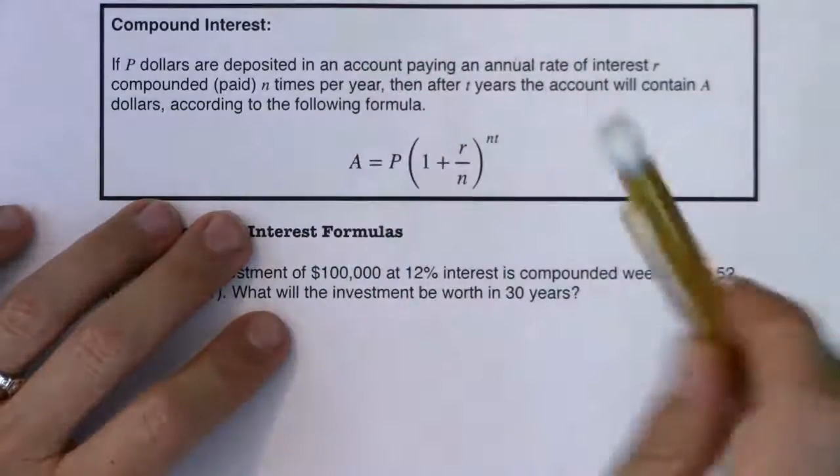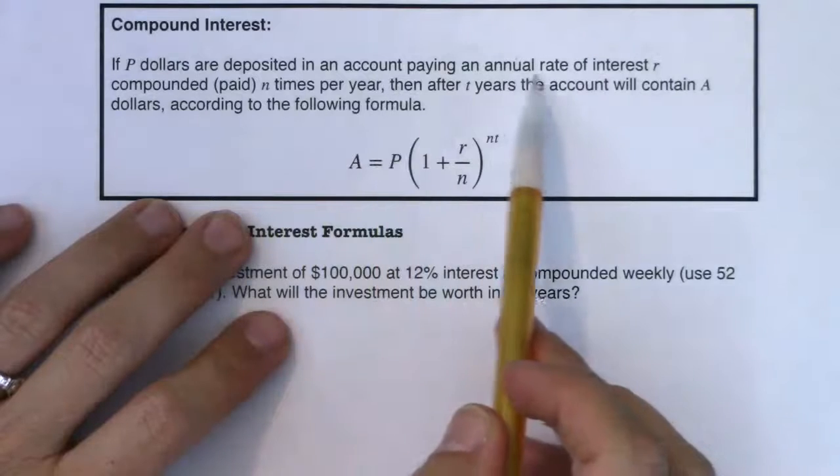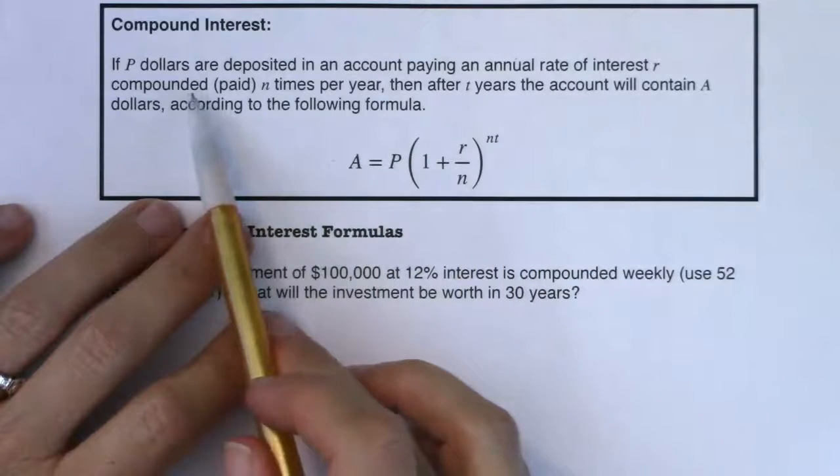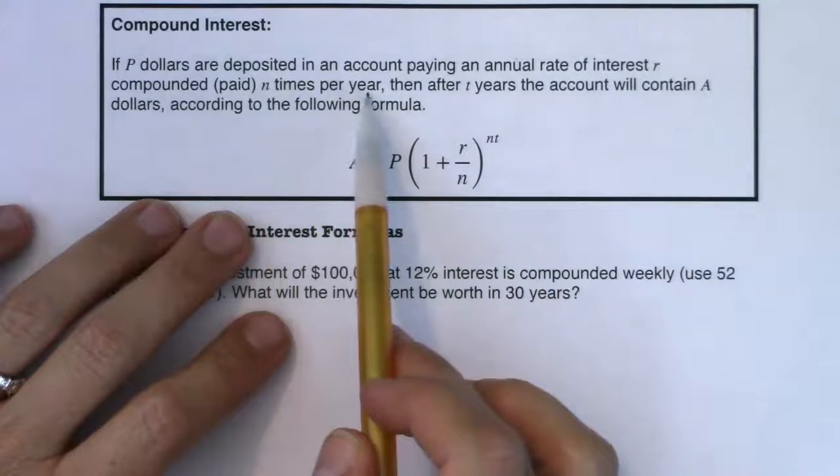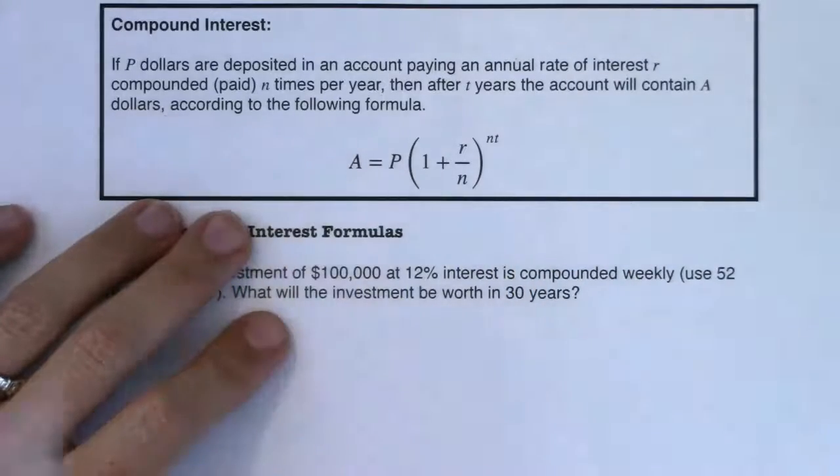So let's read through this. It says, if P dollars are deposited in an account paying an annual rate of interest R compounded N times per year, then after T years the account will contain A dollars according to this formula.